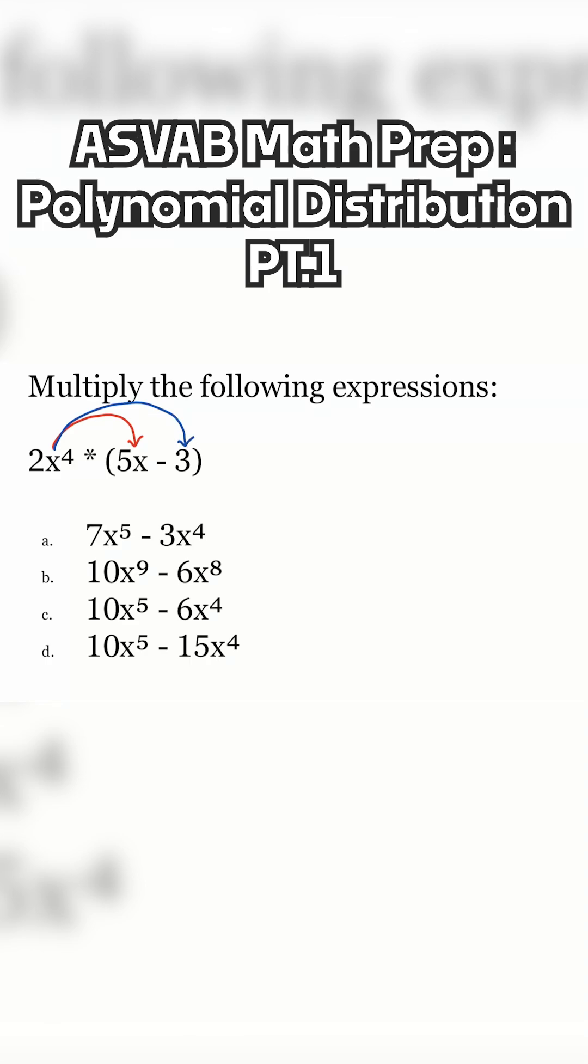Just take it one step at a time and we'll be golden. So here we go. We have 2x to the power of 4 multiplied by that 5x, then we have the minus right there.